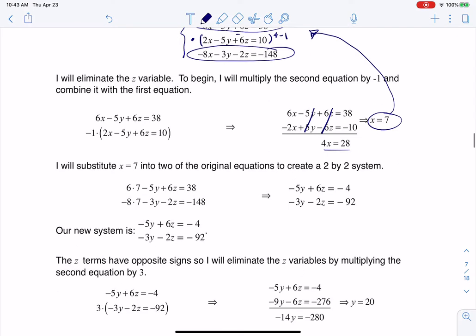And when I do that, and that's what you see me doing here, I'm substituting that 7 into two of the original equations. I get this 2 by 2.